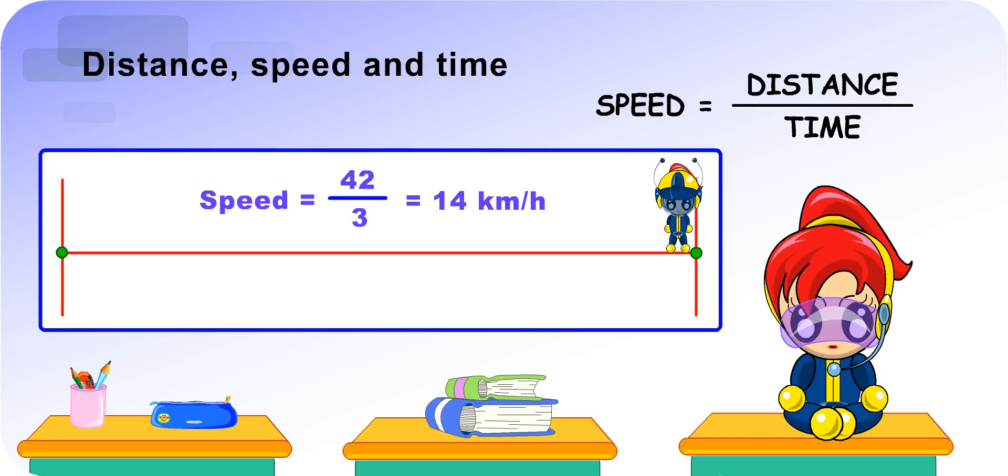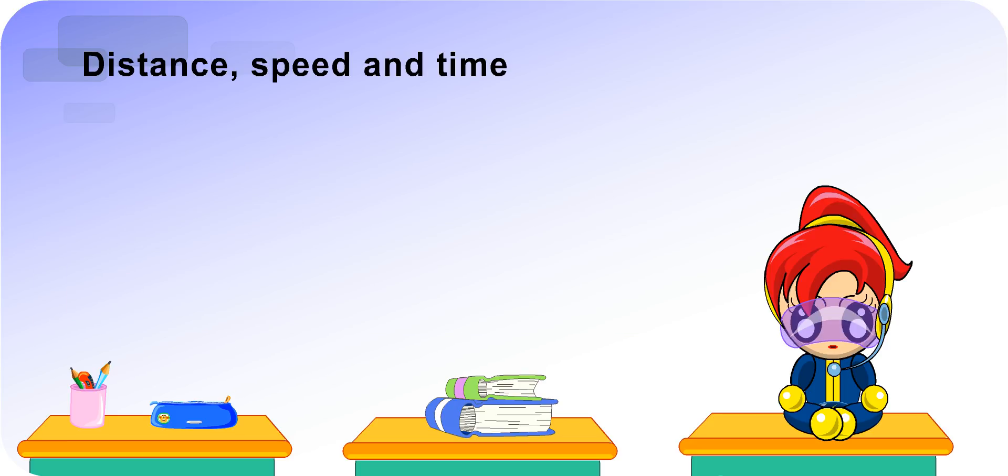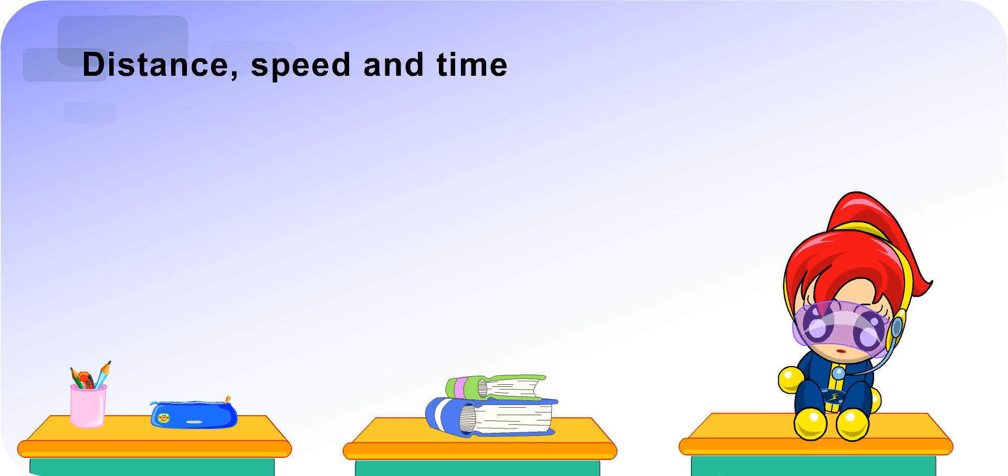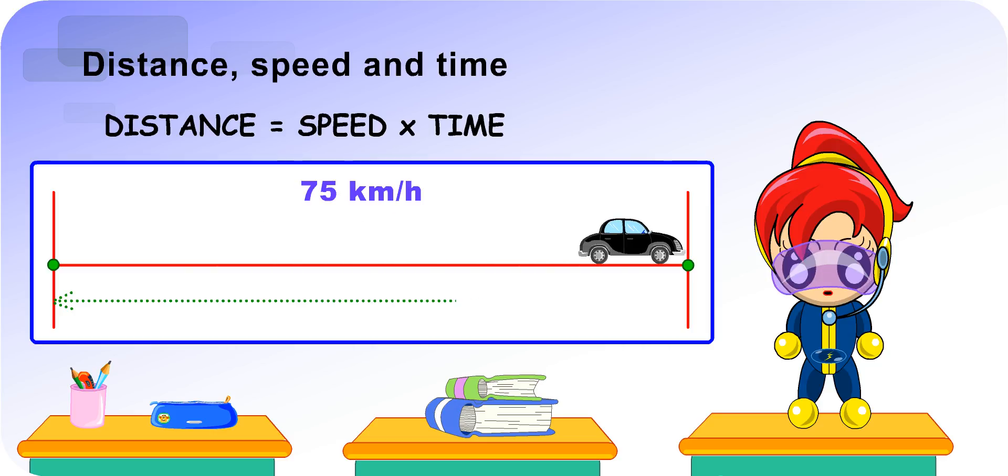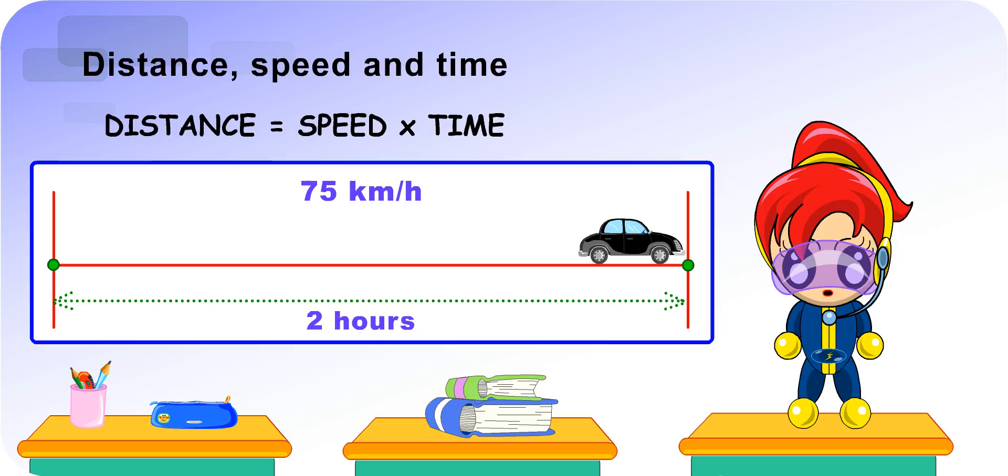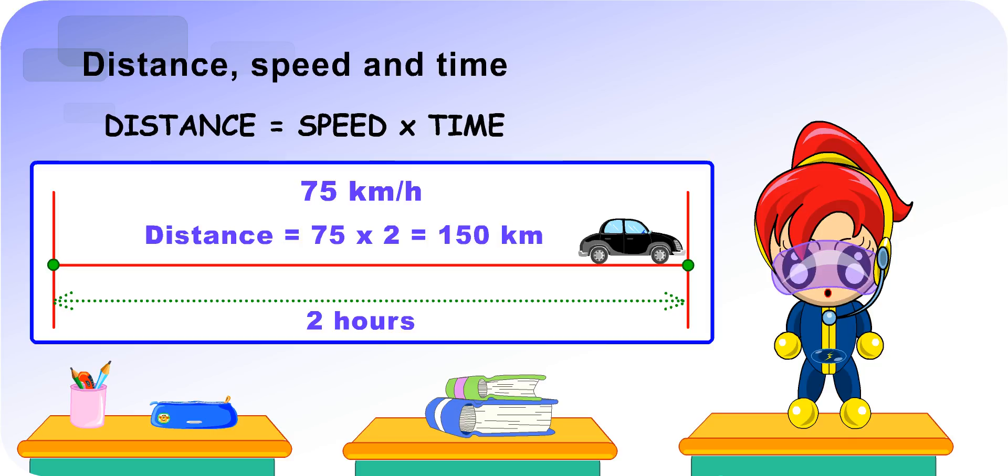Very good. By rearranging this formula, we can also find distance. Turbo Girl, can you tell us the formula to find distance? That's easy. Distance equals speed times time. If a car travels at a speed of 75 km per hour for 2 hours, the distance travelled by the car is 75 times 2, which is 150 km.